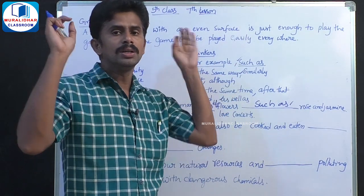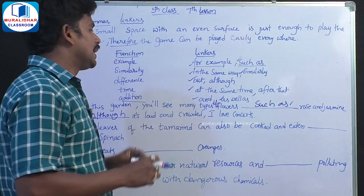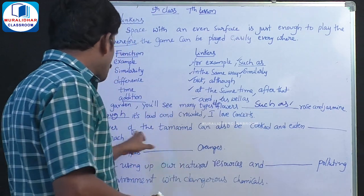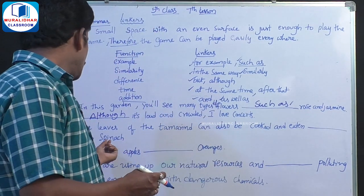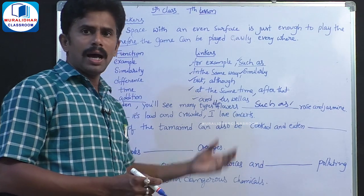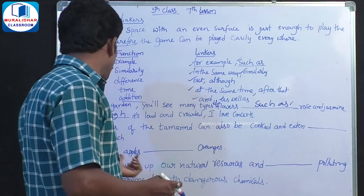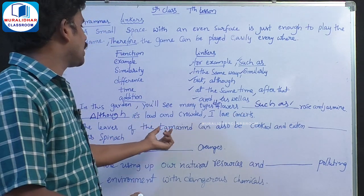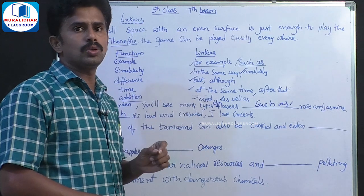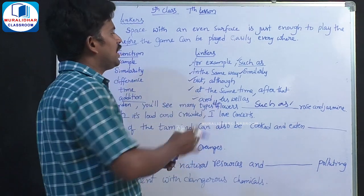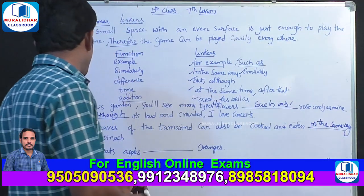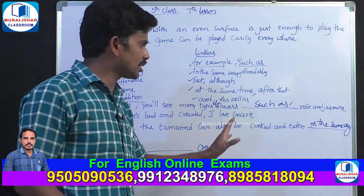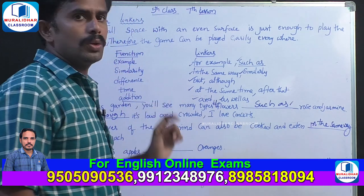I love concepts. The leaves of the tamarind can also be cooked and eaten — it's eaten as spinach. The leaves of tamarind can also be cooked and eaten as spinach. In the same way as spinach, the leaves of tamarind can also be cooked and eaten.